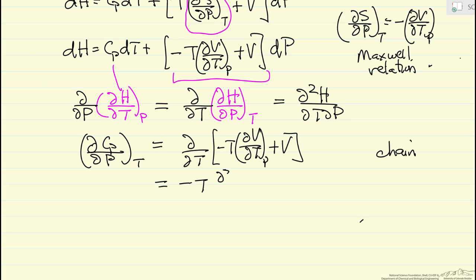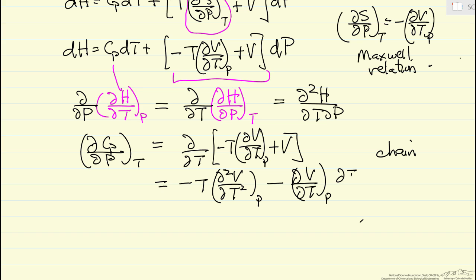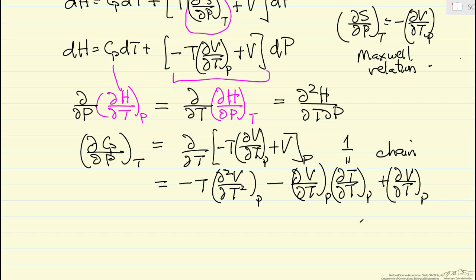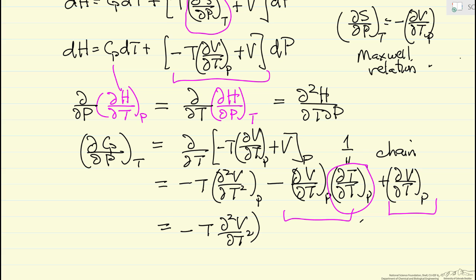Applying the chain rule gives minus T times the second derivative of V with respect to T at constant pressure, minus the first derivative of V with respect to T at constant pressure times the derivative of T with respect to T, which is 1, plus the derivative of V with respect to T at constant pressure. Notice this last term is just the negative of the preceding term, so they cancel, and we end up with minus T times the second derivative of V with respect to temperature at constant pressure. This is how heat capacity for a real gas changes with pressure at constant temperature.